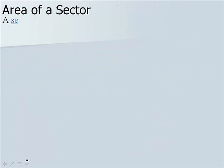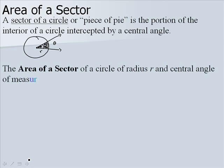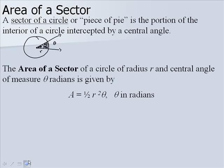Now let's look at the area of a sector. A sector of a circle, or we call it a piece of pie, is the portion of the interior of a circle intercepted by a central angle. So if we were to draw a picture of that, here's our circle, and here's our angle. So we have the radius here, and here's our degree measure theta. Our piece of pie would be this portion in here, so that would be our sector. The area of a sector of a circle, of radius r and central angle of measure theta radians, is given by the following formula: our area is one-half r squared theta, where theta is in radians. And just like our arc length, it's really important that your angle is in radian measure.